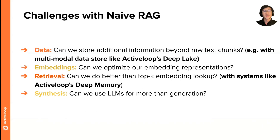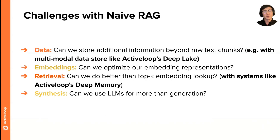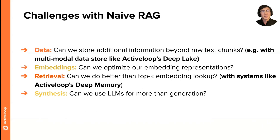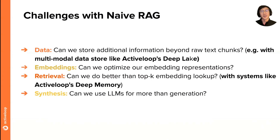In terms of what we can actually do to improve these pain points and reduce failures, there are a few different components. When building a RAG application or any LLM-centered application, you're not just using the LLM — you're attaching many components around it. It's important to think about all the parameters of each component, because many of these things affect the performance of your downstream system. This includes categories like data: what you load, how you process and chunk it, and whether you can store additional information beyond raw text chunks — for instance, with ActiveLoop's DeepLake store.